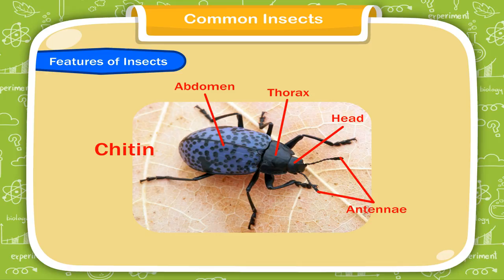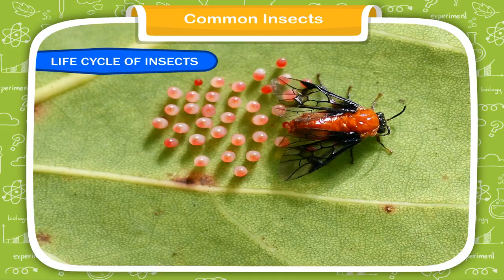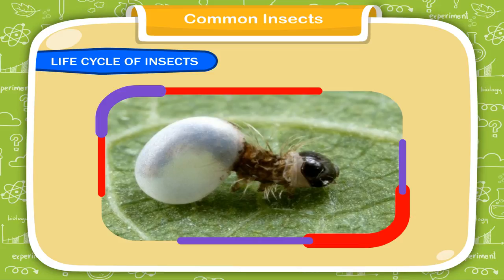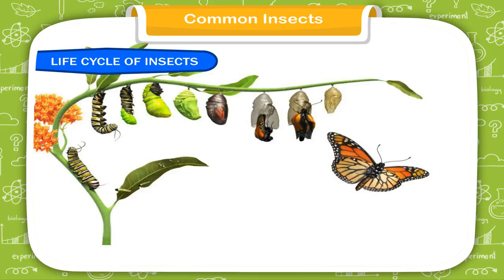Life Cycle of Insects. Insects reproduce by laying eggs. The young insects hatch out from the eggs and pass through various stages before growing into adults.